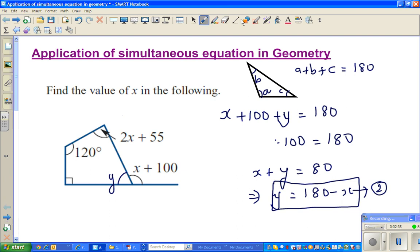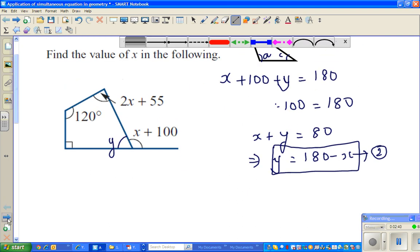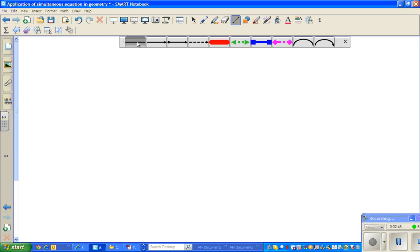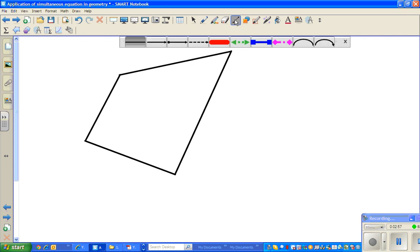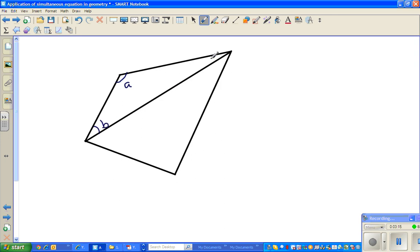So if you draw a quadrilateral, this quadrilateral can be split into two triangles. Let me split this into two triangles. So this can be split into two triangles. Now we know A plus B plus C, if this is A, this is B, and this is C, we know A plus B plus C is 180. And if you take these three angles of this triangle, this is D, E, and F.